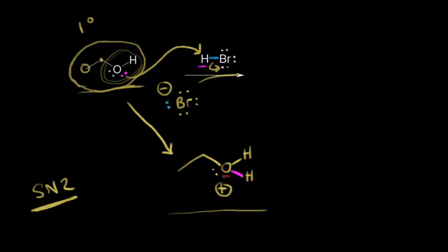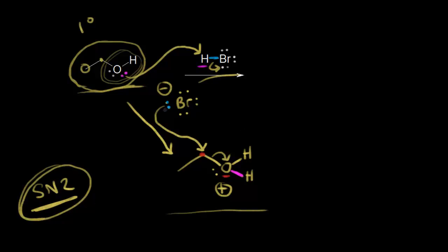The oxygen is withdrawing electron density from the carbon marked in red, making it the electrophilic portion. The nucleophile — the bromide anion — attacks the electrophile and forms a bond between bromine and the carbon. At the same time, in a concerted SN2 mechanism, these electrons come off onto the oxygen. The bond forms at the same time that the C–O bond breaks and the electrons come off onto the leaving group.